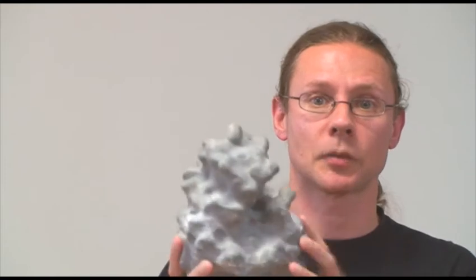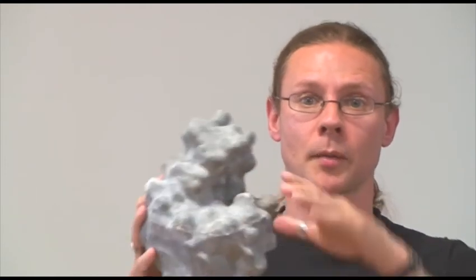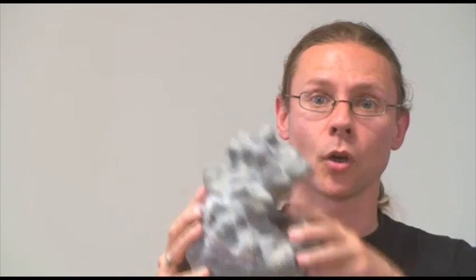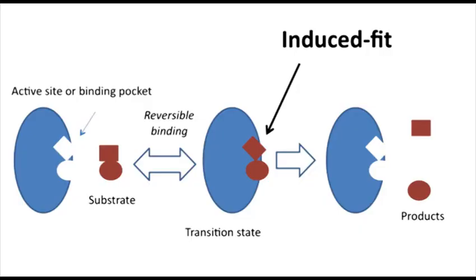Remember lysozyme? In the podcast, 'How is the shape of an enzyme related to its function,' I explained how the substrate of lysozyme binds into the binding pocket of its enzyme. We saw that the substrate of lysozyme is peptidoglycan and that in order for peptidoglycan to fit into its binding pocket, it had to change its conformation. By changing the conformation of peptidoglycan, the enzyme is able to catalyse its breakdown, thereby killing the bacteria that rely on peptidoglycan.